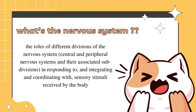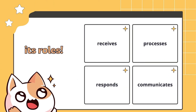What is the nervous system? It's a complex, highly organised network of specialised cells. It receives, then processes, then responds to information. It controls everything in the body, either voluntarily or involuntarily. It also communicates between internal cells and organs and the external environment.